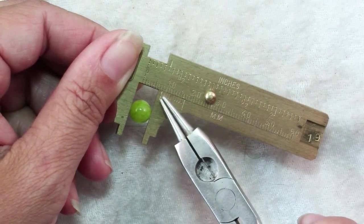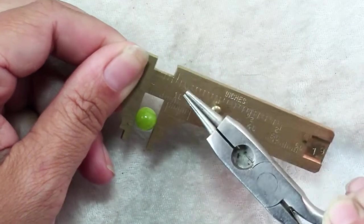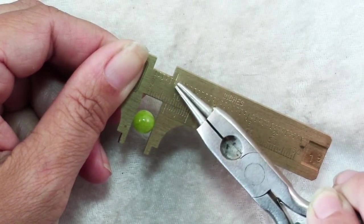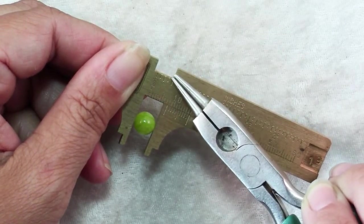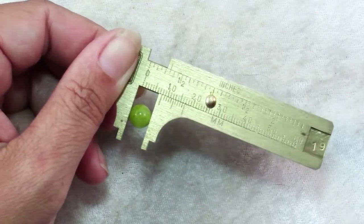This bead is about 8 millimeters, or if you look up here in inches, it's about 5/16 of an inch, measured from the scribed line on the caliper.